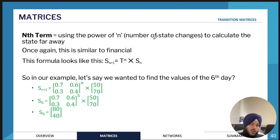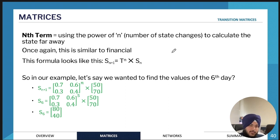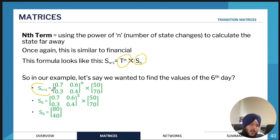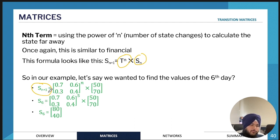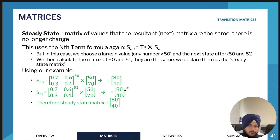For longer-range prediction we use the nth term rule, which is very similar to financial maths. It would be very hard to use recurrence relations if you needed to predict the number of people after 50 days, because you'd need to find each step one by one. Instead, you can use T to the power of n times S₀. So to find Sₙ₊₁ it's simply the transition matrix to the power of n multiplied by the initial state matrix. For example, to find the number of people on the sixth day: S₆ equals T to the power of 5 times S₀. You would do this on your CAS.